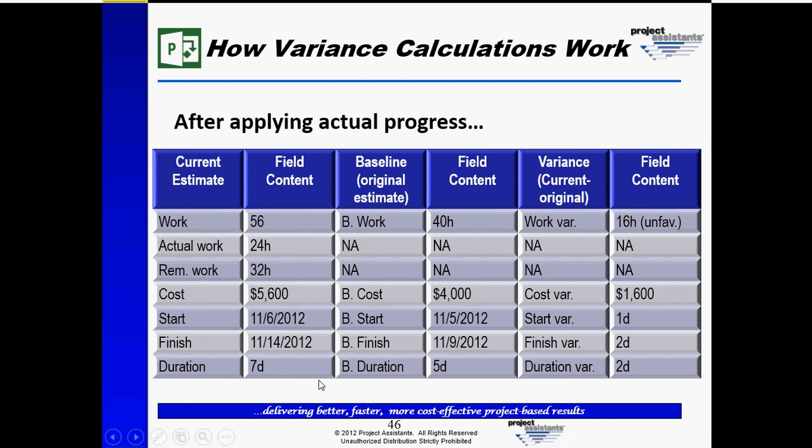The same is true for the duration. It was five days, now it's been changed to seven days, and there's an unfavorable duration variance of two days.